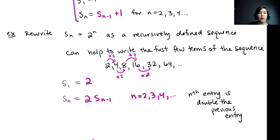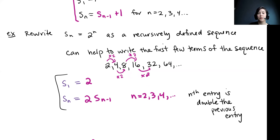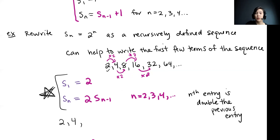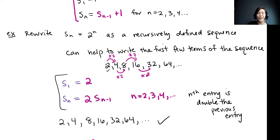Once you have your rule, it's always a good idea to check your work. Using this recursively defined rule, the first term is 2. The second term is 2 times 2 equals 4. The next is 2 times 4 equals 8, then 16, then 32, then 64, and so on. This matches our explicit rule Sn equals 2 to the n, so our recursively defined sequence checks out.